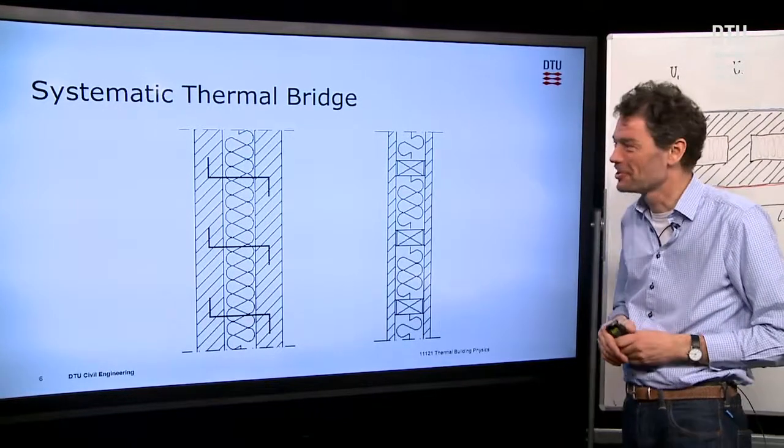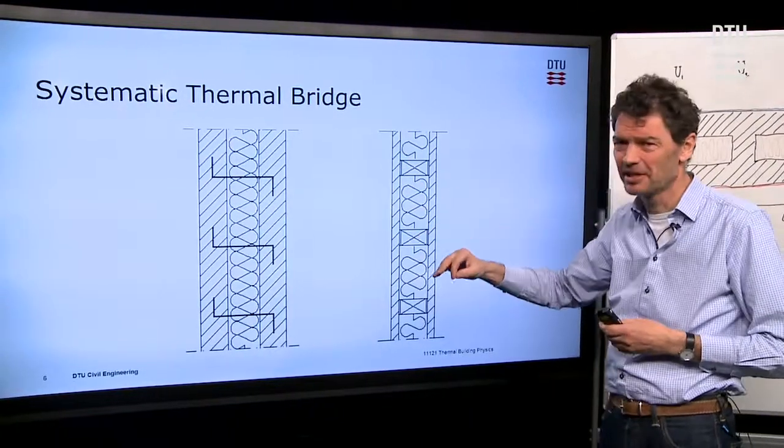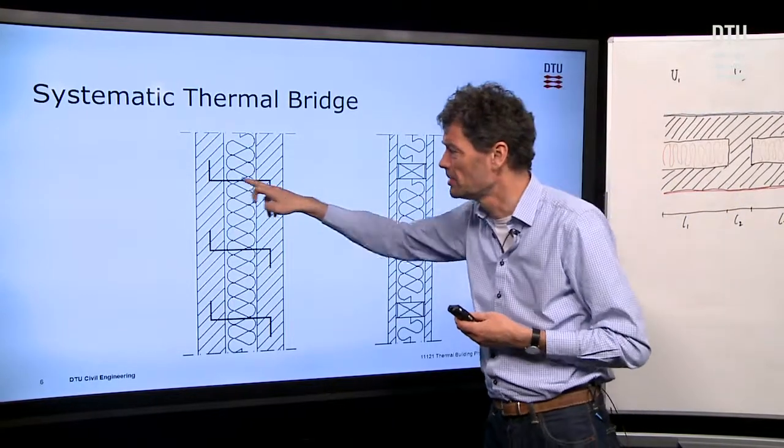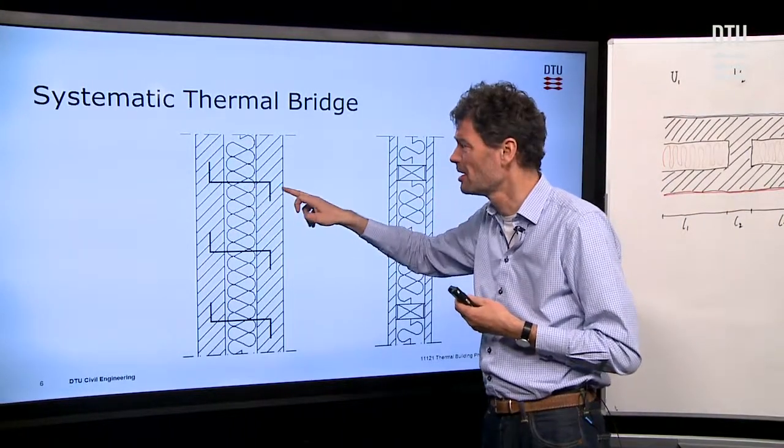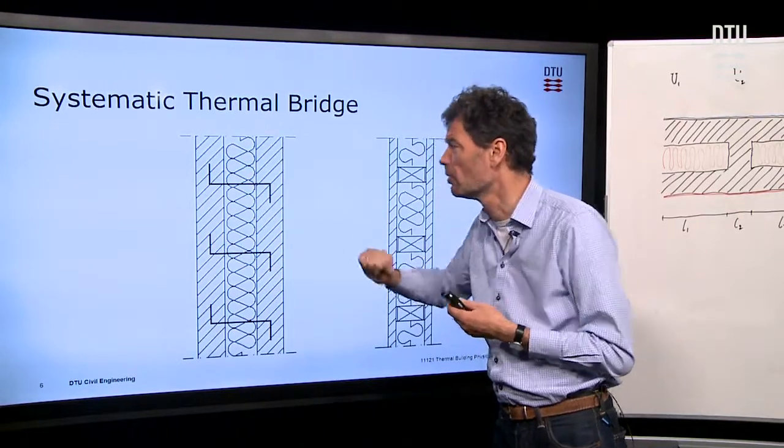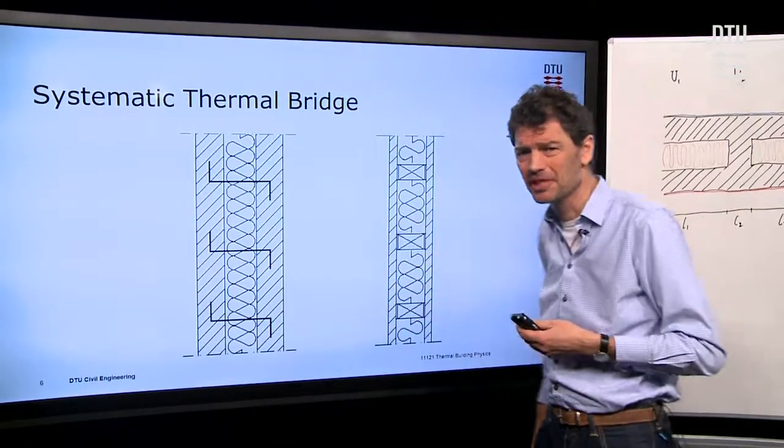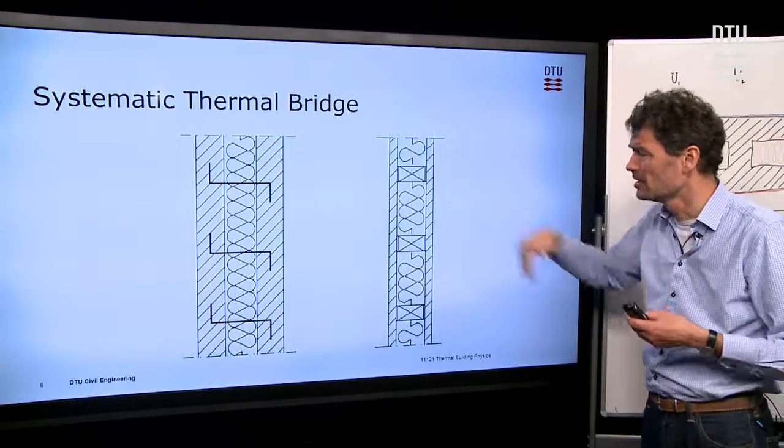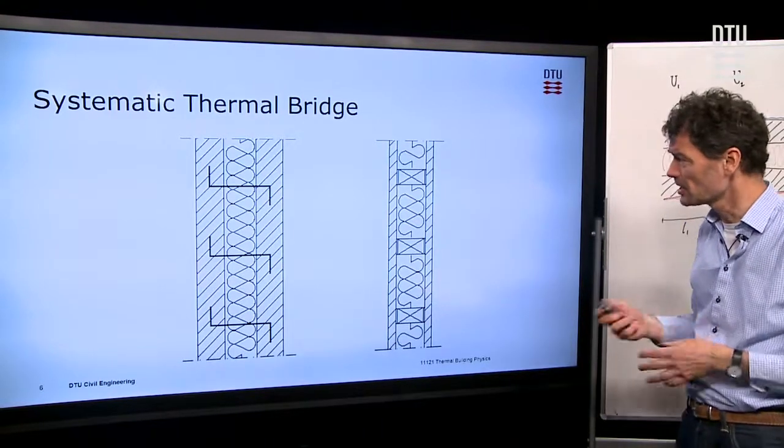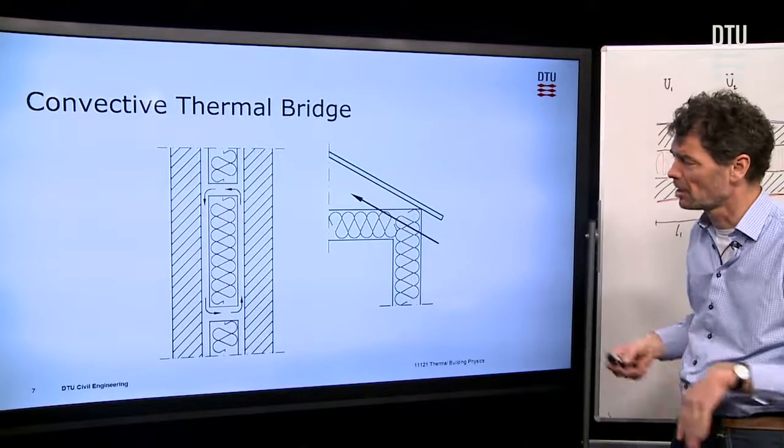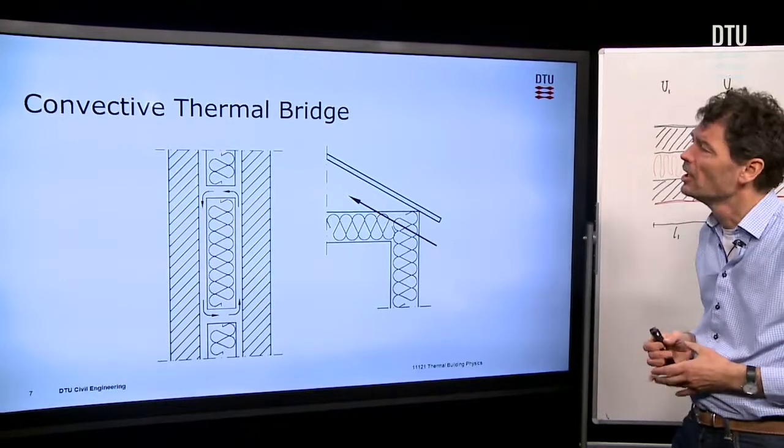Smaller variations of such bridges could be some that come systematically. Perhaps in smaller areas, but they come again and again. That could be a metal tie that ties together the inner and outer leaf of a brick wall and thereby passes through the insulation, or it could also be the wooden joists that you would have in some lightweight walls.